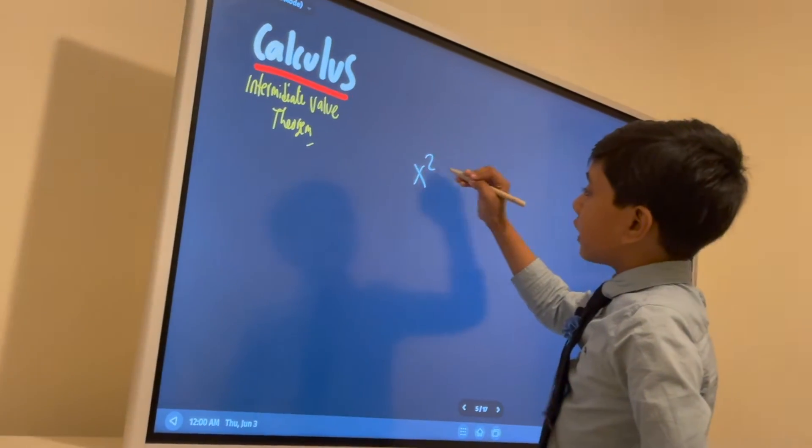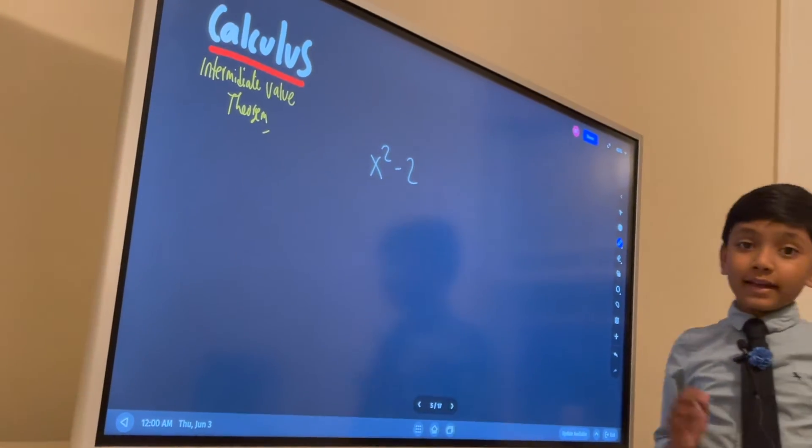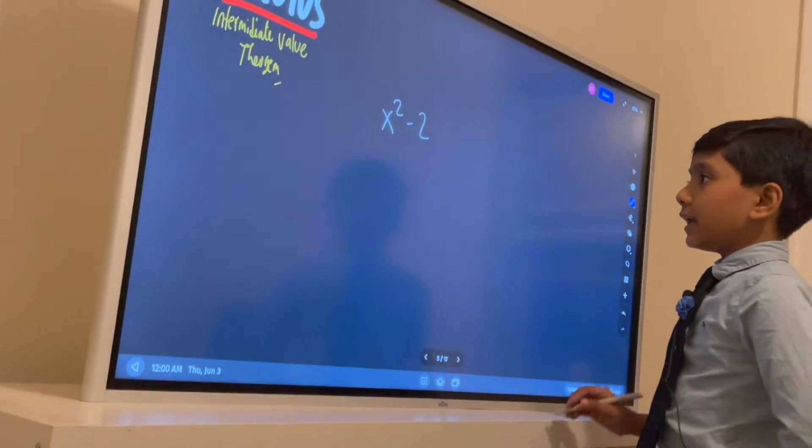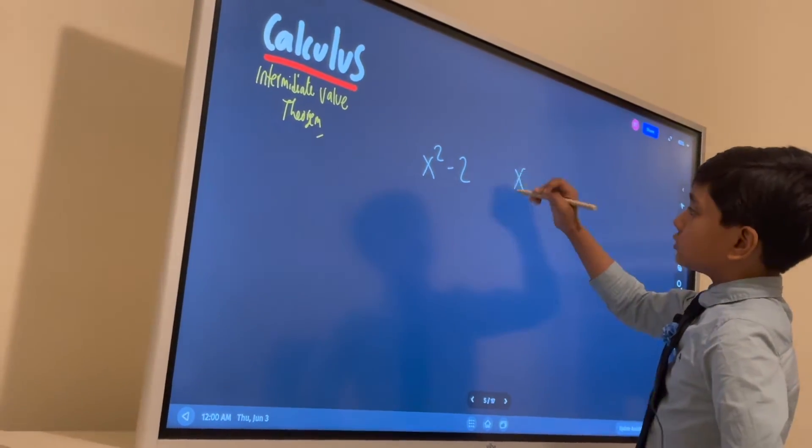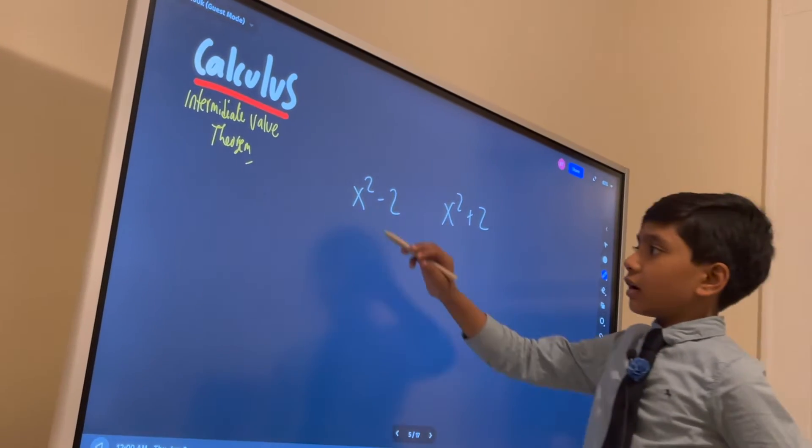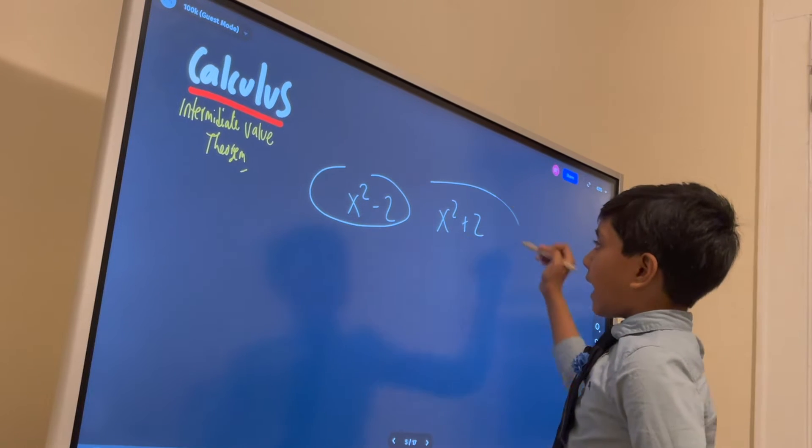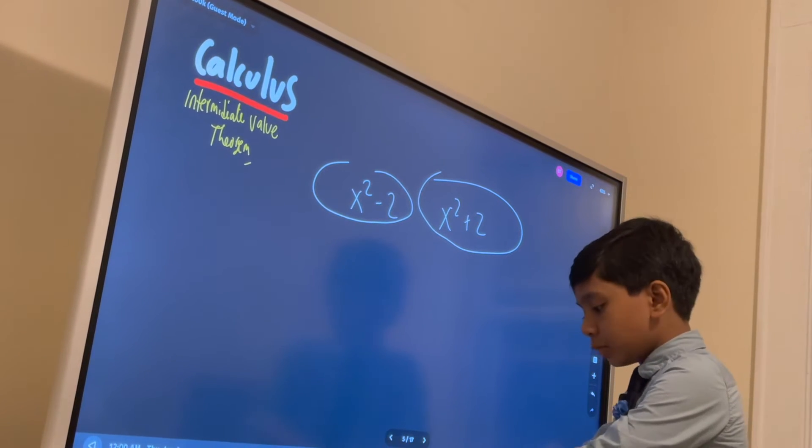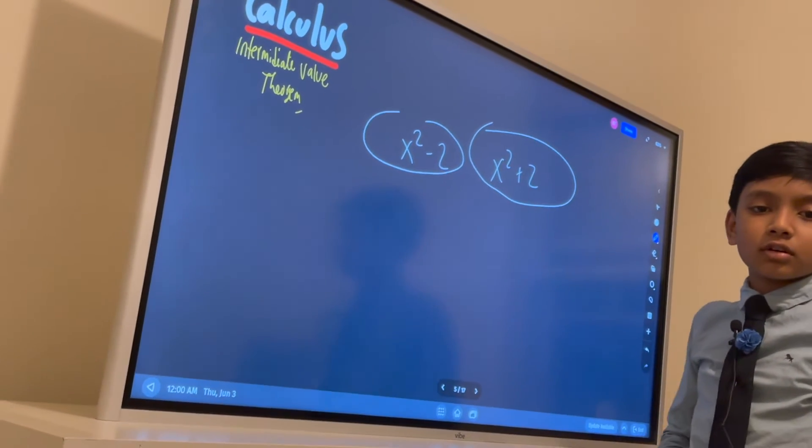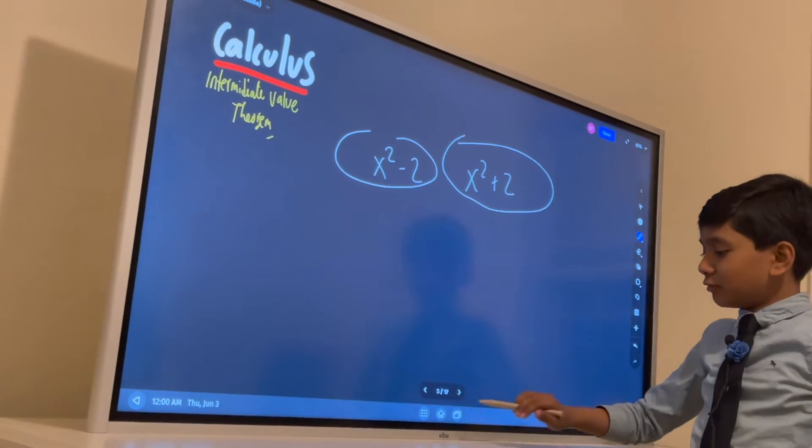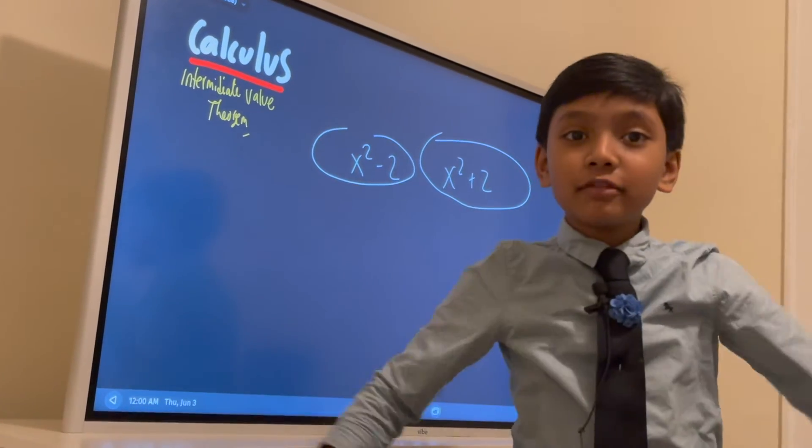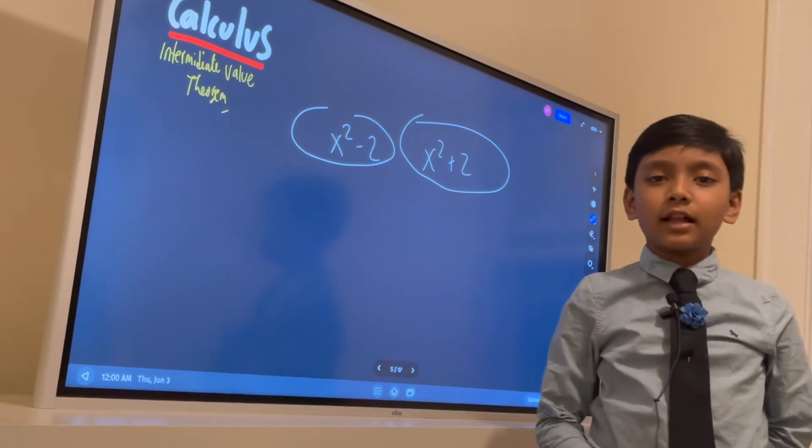So x squared minus two. And what I will also give you is the example x squared plus two. And you have to find proof that they have positive roots without typing in Desmos or Wolfram Alpha and checking the graph. So now we will go to Desmos and Wolfram Alpha. Just kidding! We will see what to do now.